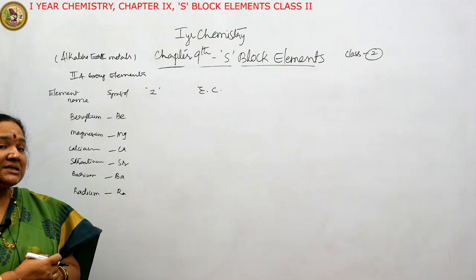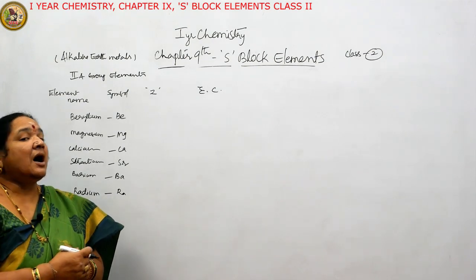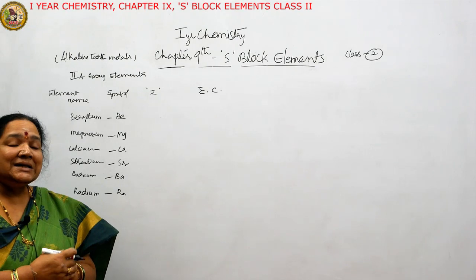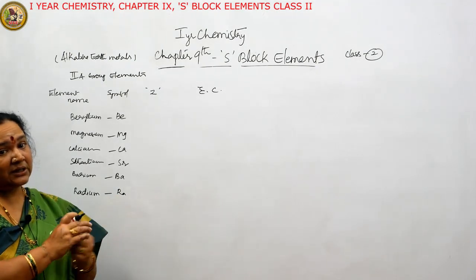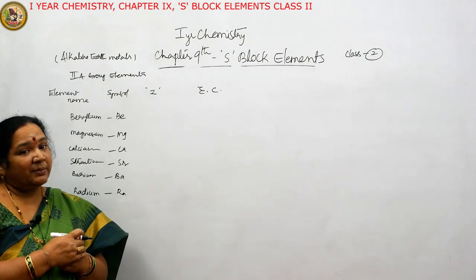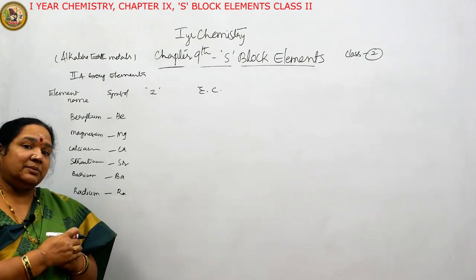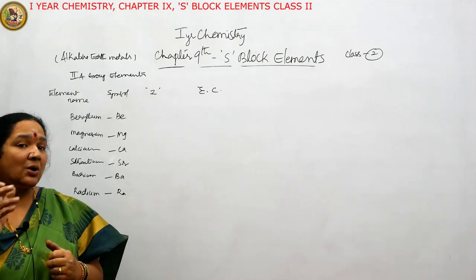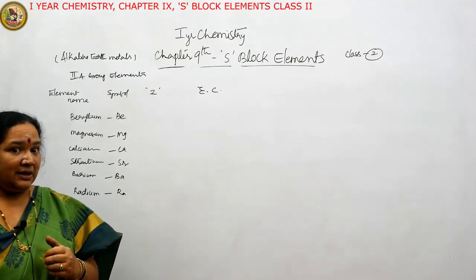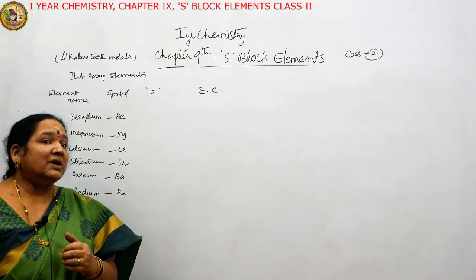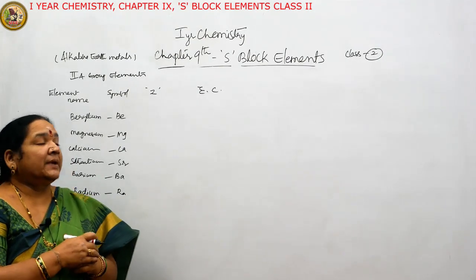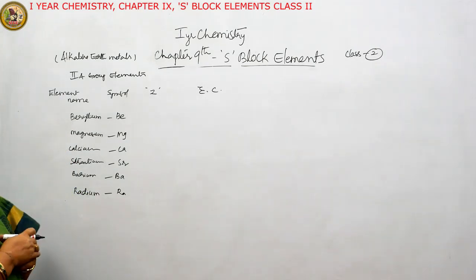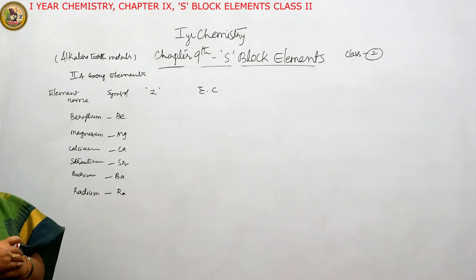They are called 'earth' metals because almost all these metals occur in the earth's crust. That is why the name alkaline earth metals is given to second group elements. Coming to atomic numbers (Z): the atomic number of beryllium is 4.